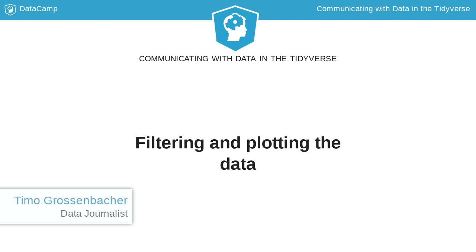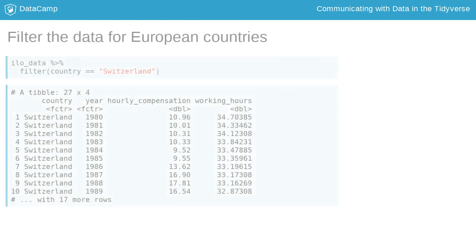Before visualizing this relationship, you'll need to use the filter function to retain only European countries in the dataset. That's a good set of countries where data for both 1996 and 2006 are available, the years you are going to compare in the second chapter of this course.